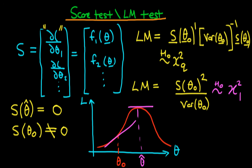This would be different if θ₀ were actually quite close to the maximum likelihood estimates. In that circumstance, the gradient might be much less steep, and hence we wouldn't be able to reject the null hypothesis that the parameters are given by θ₀. Note that even though illustrated in the univariate case, the intuition behind the multivariate case — where we're talking about a vector of parameters — is exactly the same.